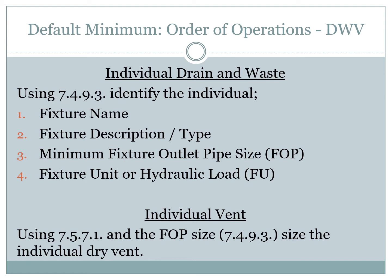A few things you need to know — what I call the order of operations. You need your fixture name, your fixture description or type, your fixture outlet pipe size, and your fixture unit and hydraulic load. And then for the vent, you just need your individual dry vent size.